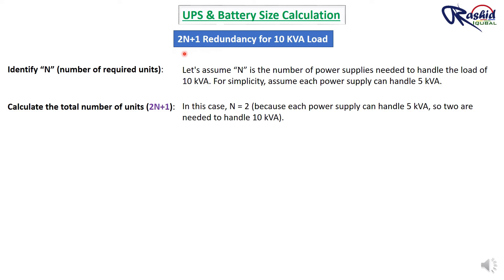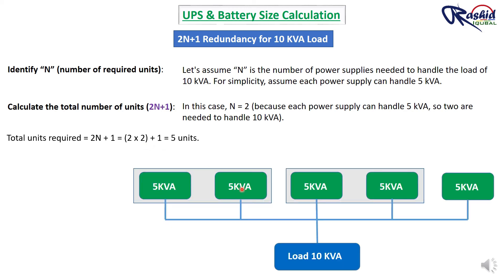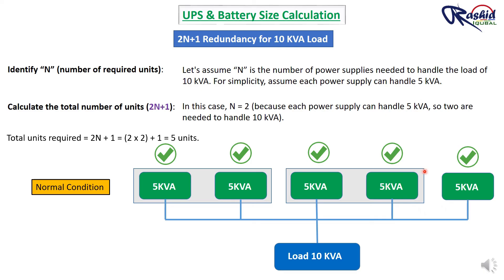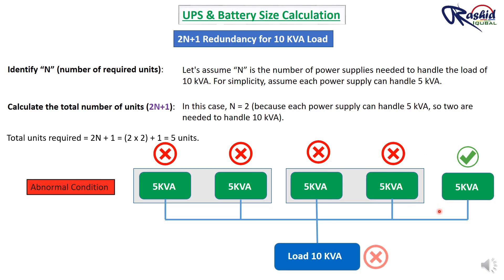For 2N+1 redundancy: 2N+1 = 2×2+1 = 5 total units required. This setup includes four 5 kVA UPS units running in two sets of two, plus one extra 5 kVA UPS as backup. In normal operation, two sets of two units share the load. The system can tolerate up to three UPS failures before the single remaining unit is unable to handle the full 10 kVA load.